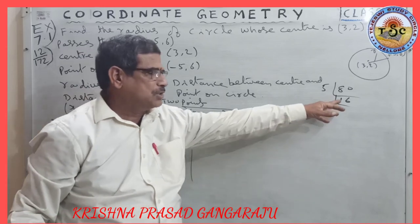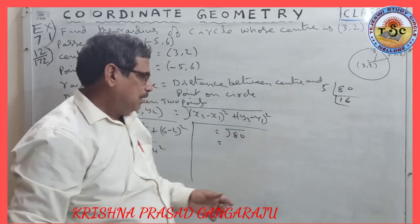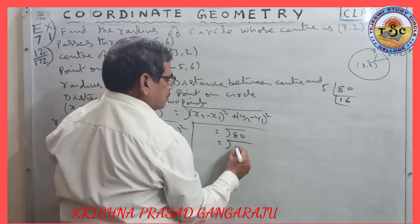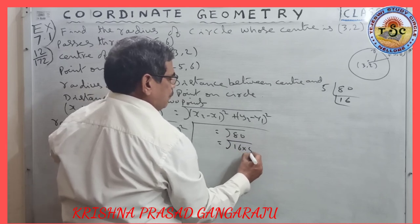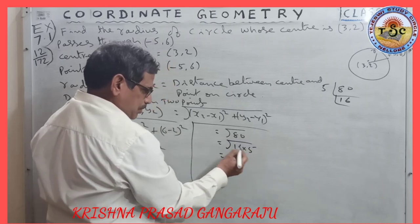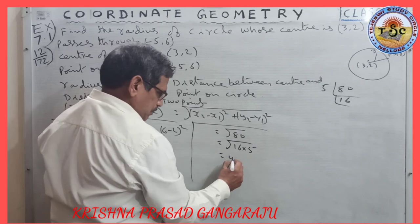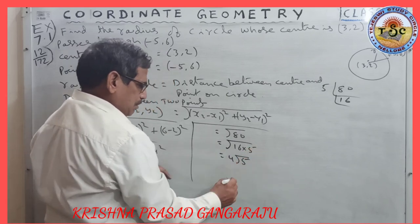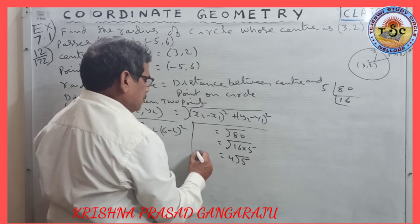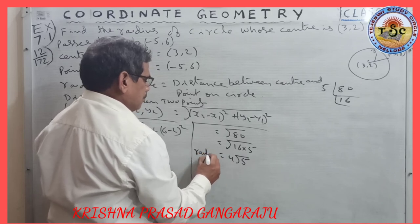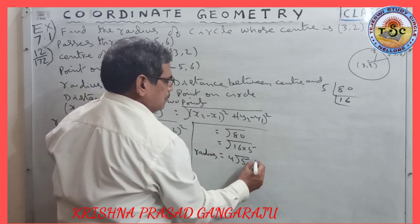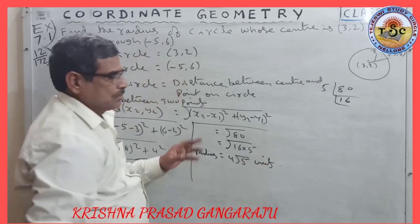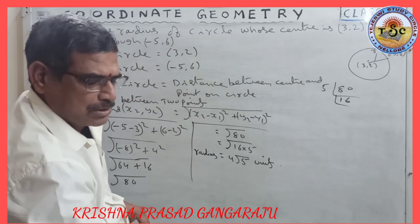Root of 80 can be simplified as root of 16 × 5, which equals 4 root 5. So the radius of the circle is 4√5 units.